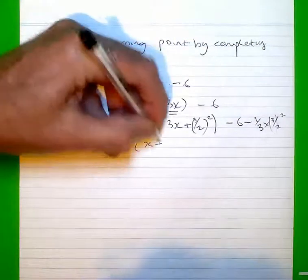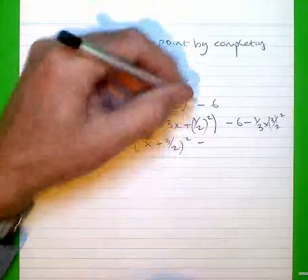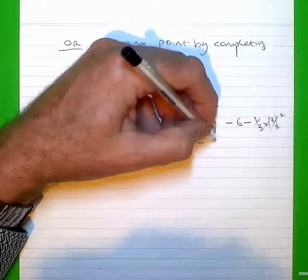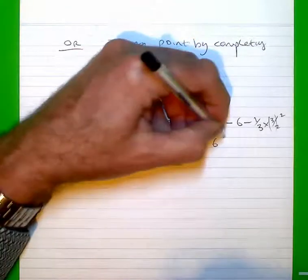I've got a perfect square of x plus 3 over 2 all squared. And when I sort out the other business I'll have negative 6 and 3 quarters.